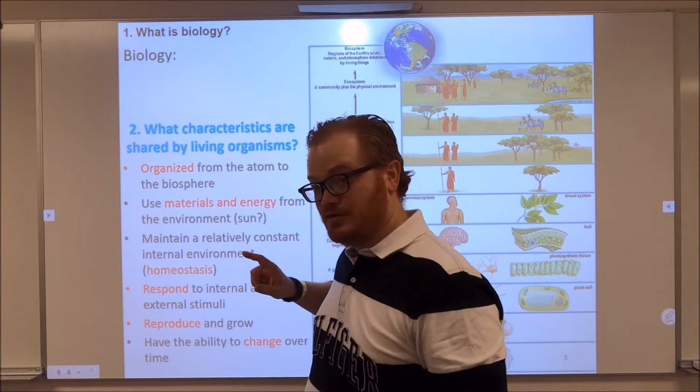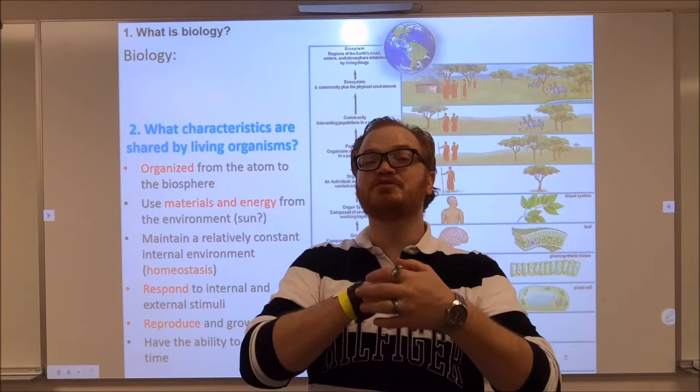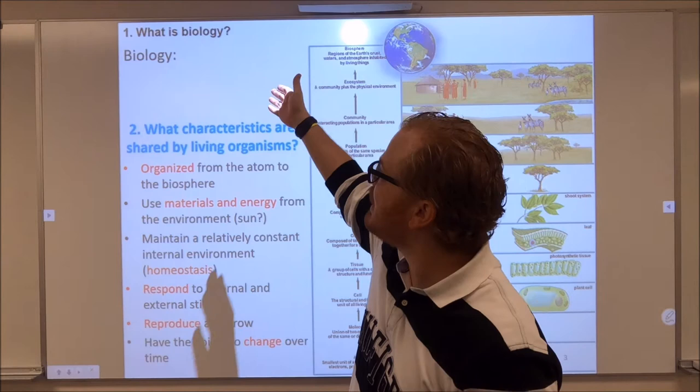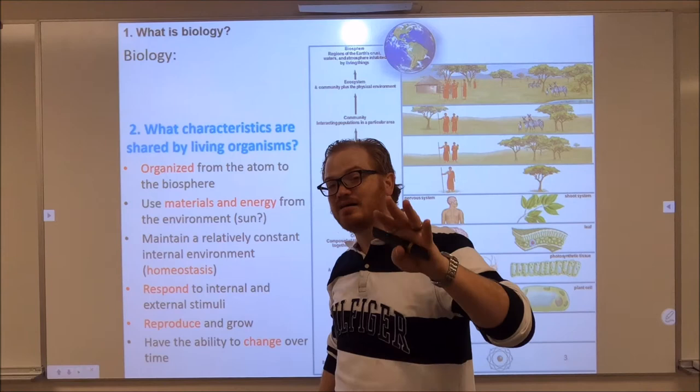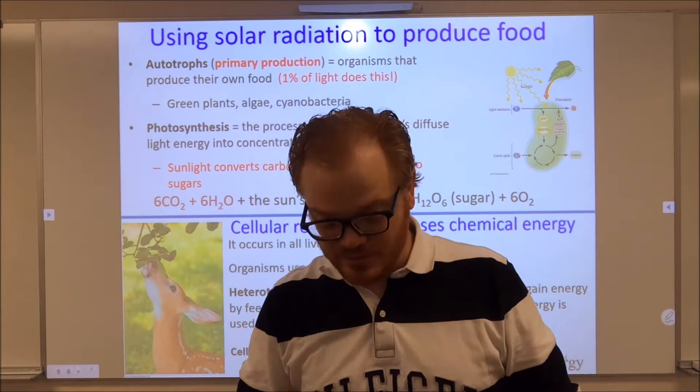Think about a butterfly — it did not look like a butterfly earlier in its lifespan. It starts as an egg, hatches into a larval form, then pupates, and emerges as a sexually active adult. We do the same thing. The only variation is that our egg is inside a mom, who gives birth to a live offspring, and that offspring goes through changes culminating in puberty, leading to a reproductively capable individual. These are the characteristics of living things.